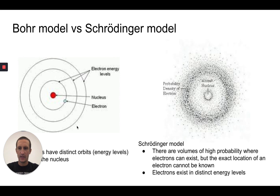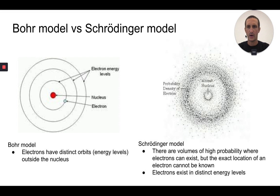First thing I want to mention is comparing and contrasting these two models of the atom, the Bohr model versus the Schrödinger model. One thing to note is that the Bohr model, the electrons have distinct orbits, or sometimes we think of those as energy levels that are outside the nucleus.